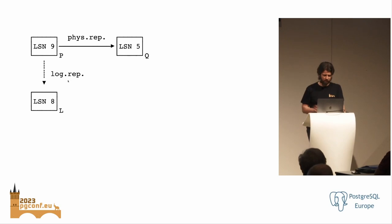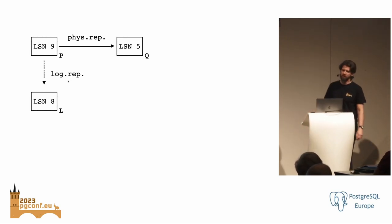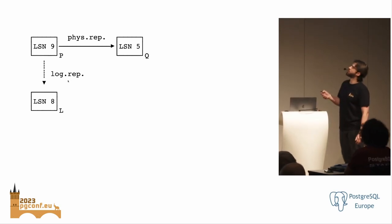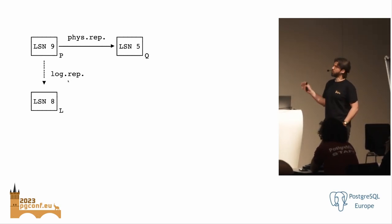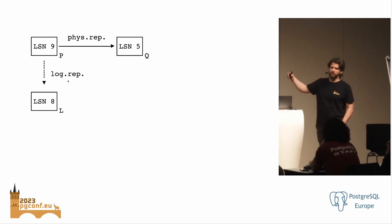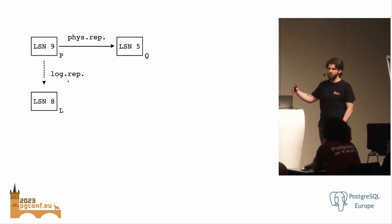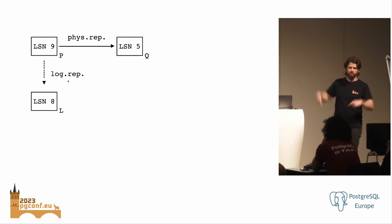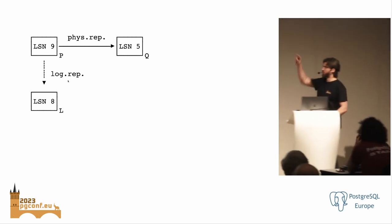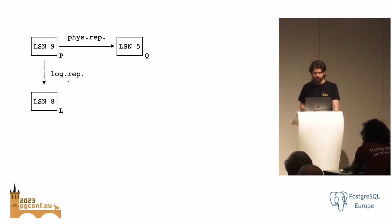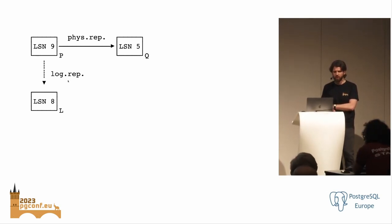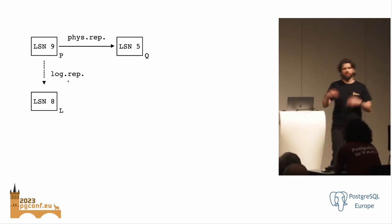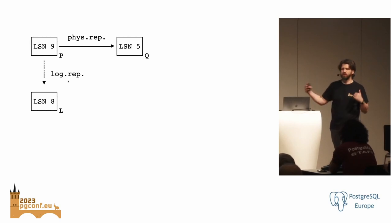Now I want to explain a second, less-known problem. Consider this scenario with a physical replication pair and logical replication attached. I'm using LSN values here — log sequence numbers that track how far replication has progressed. The primary is most ahead, then due to network delays and processing speed, consumers may be at different progress levels.